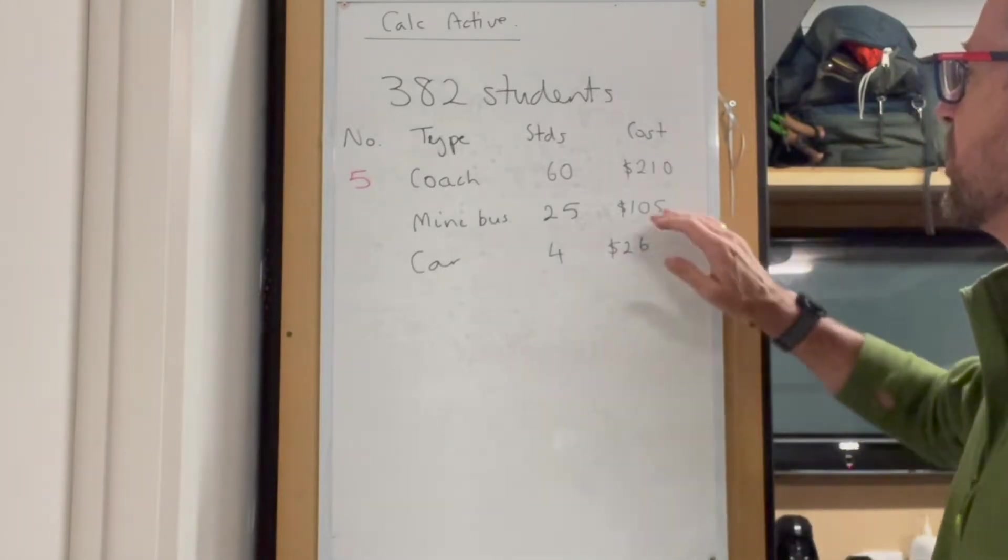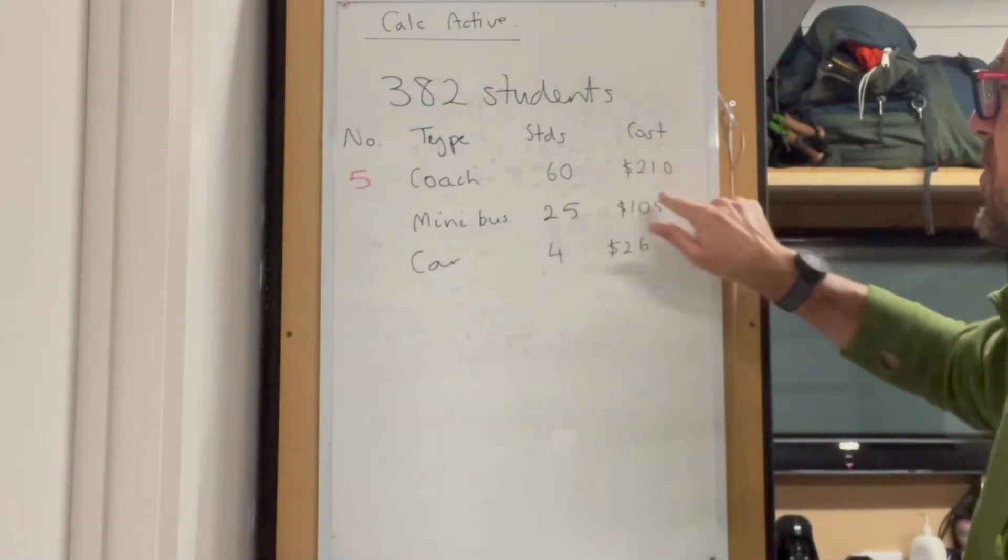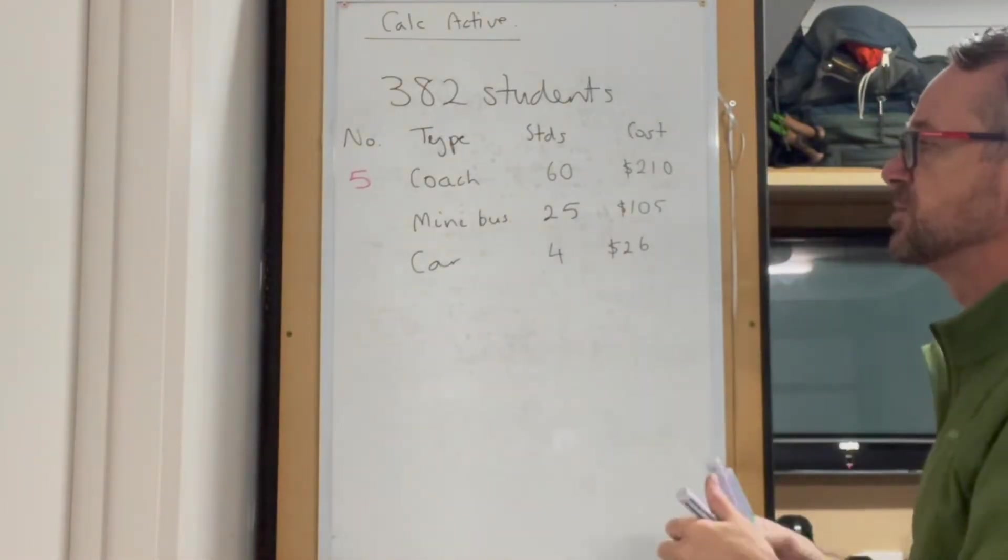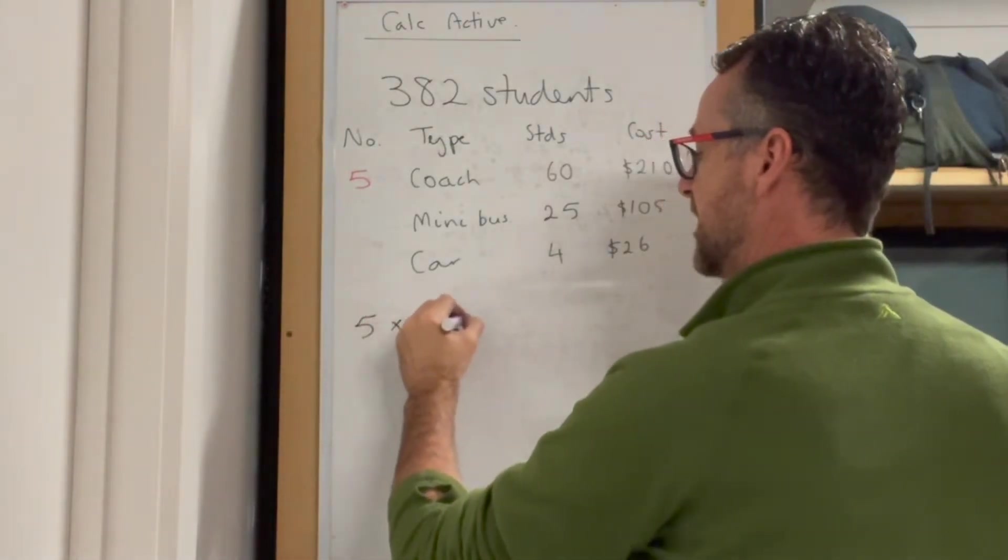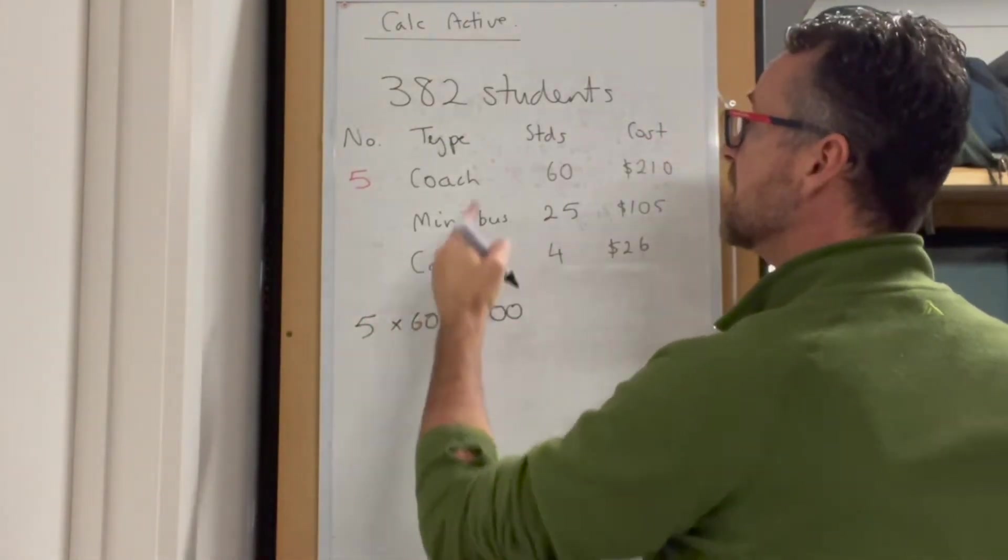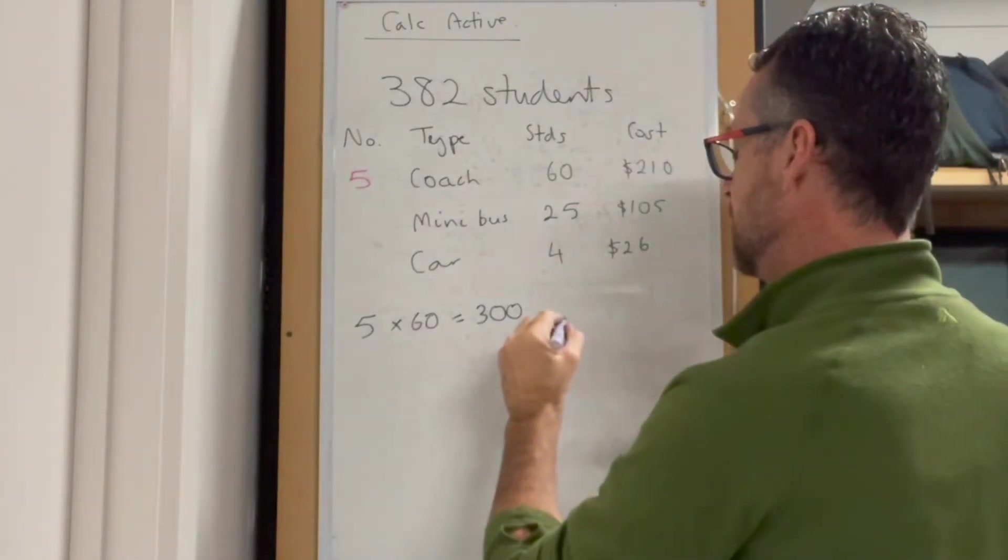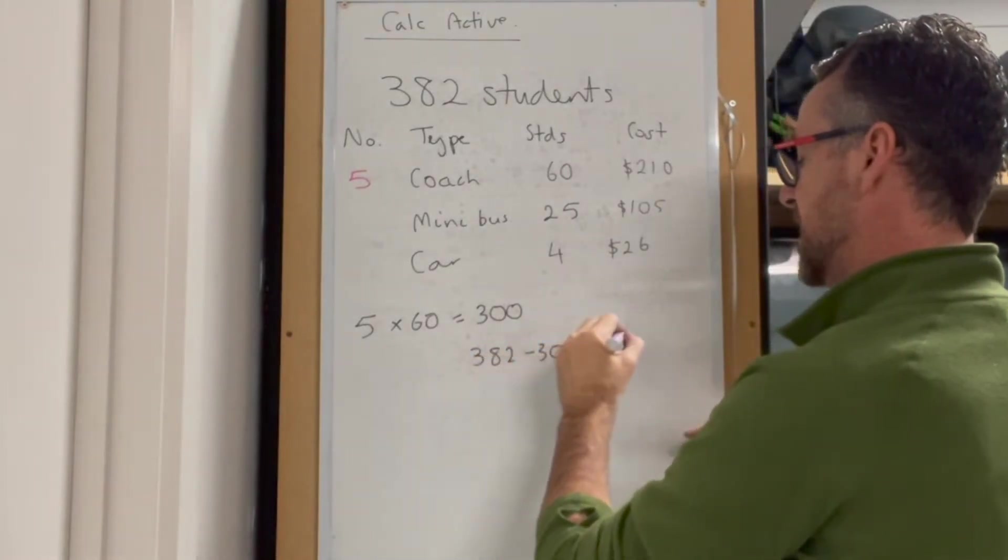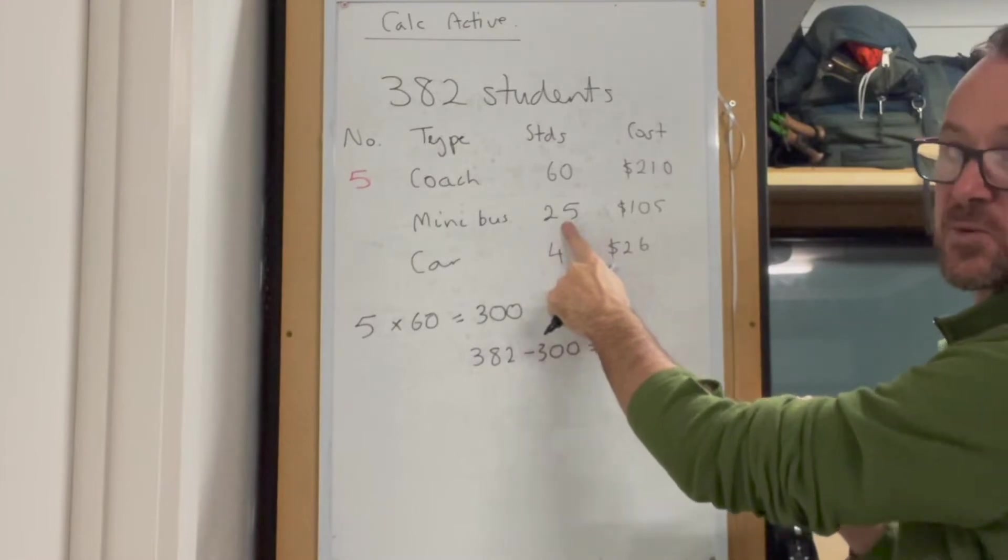With the pricing here, a minibus moves fewer students at half the cost, so go with as many coaches as possible. 5 times 60 equals 300 students. From 382 students, we take away 300, which leaves us with 82 students.